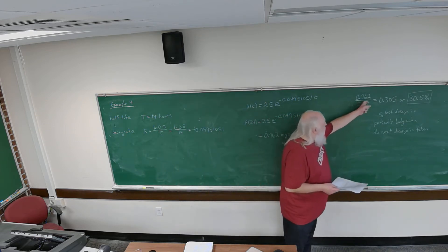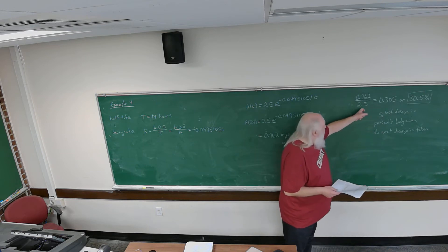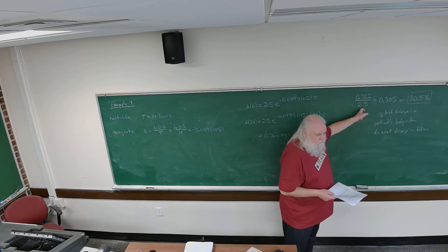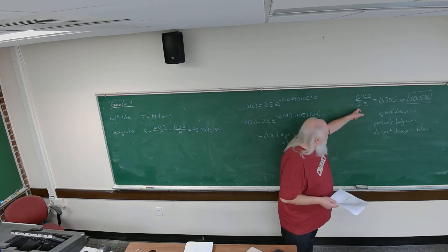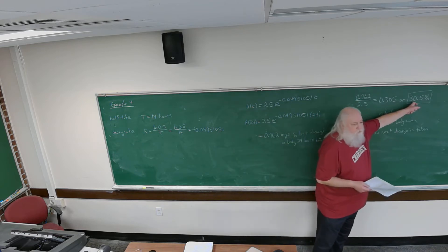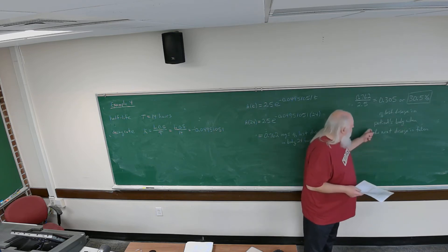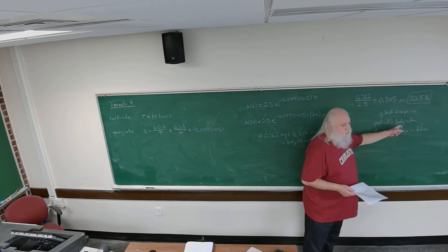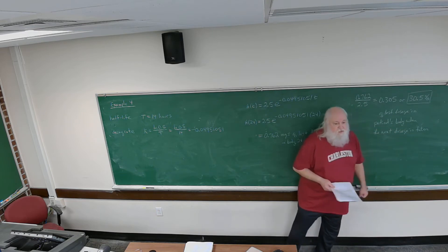The question asks what percentage of the last dosage remains when the next dosage is taken 24 hours later. So we divide 0.762 milligrams by the dosage size of 2.5 milligrams, and when we do that division we get 30.5%. So 30.5 percent of the last dosage is in the patient's body when the next dosage is taken.